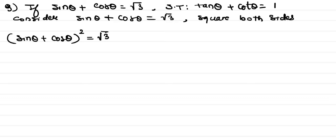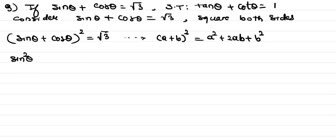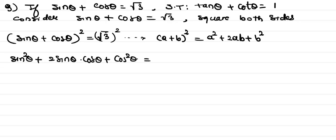Opening the bracket using the identity (a + b)² = a² + 2ab + b², this becomes sin²θ + 2 sin θ · cos θ + cos²θ = 3.